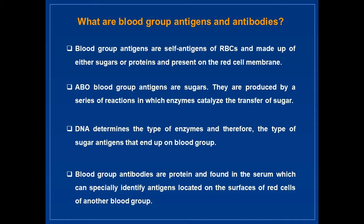What are blood group antigens and antibodies? Blood group antigens are self-antigens of RBCs, made of either sugars or proteins, and present on the red cell membrane. ABO blood group antigens are sugars, produced by a series of reactions in which enzymes catalyze the transfer of sugar. DNA determines the type of enzyme and therefore the type of sugar antigens that end up on the blood group.